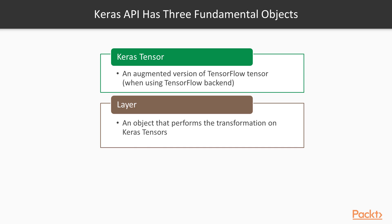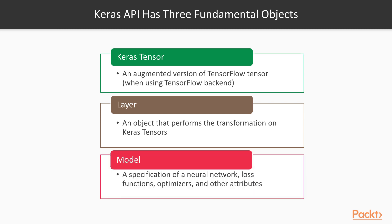Second is a Layer, and this is an object that performs a transformation on Keras tensors. A model can be made of many layers. And finally a Model, and this is a specification of a neural network, loss function, and other attributes such as optimization, building together a set of layers to perform transforms on Keras tensors.